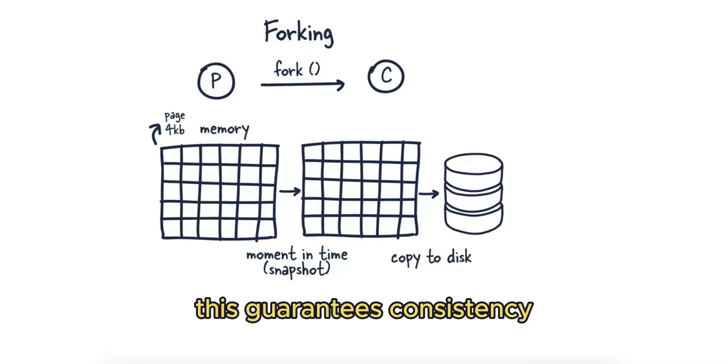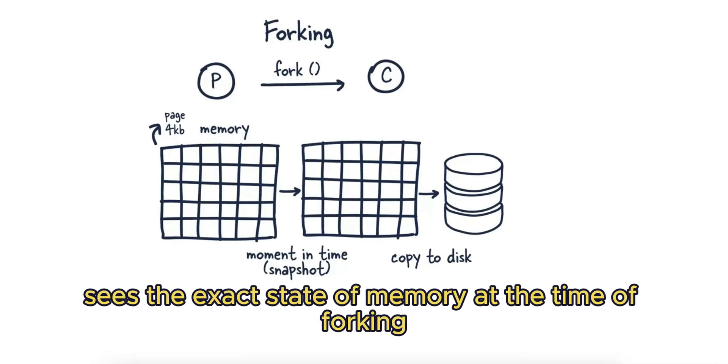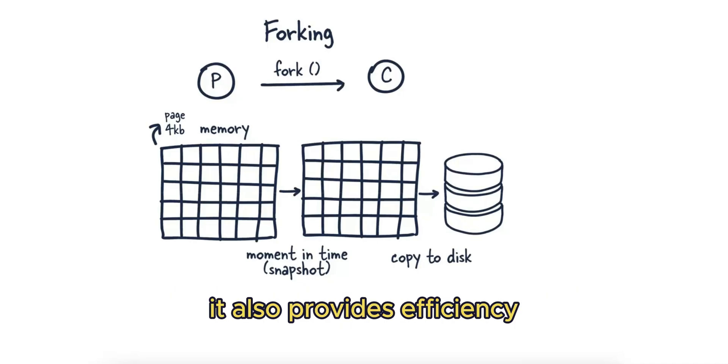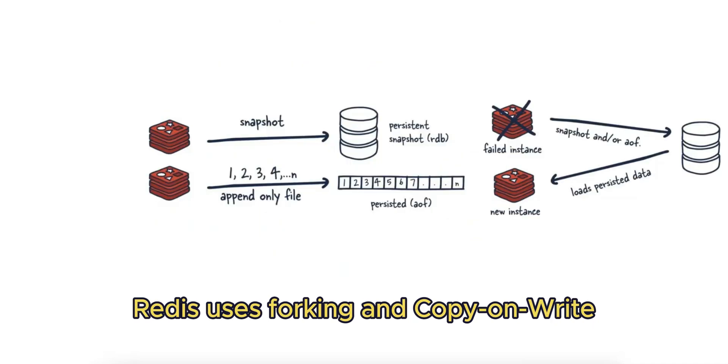This guarantees consistency, as the child process responsible for saving the data sees the exact state of memory at the time of forking. It also provides efficiency because only modified pages are copied, which minimizes memory usage.